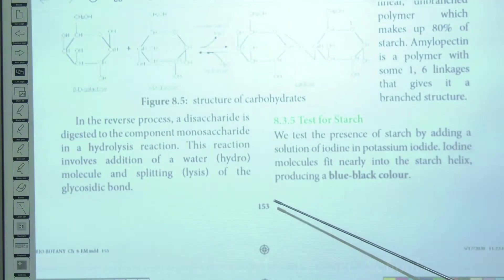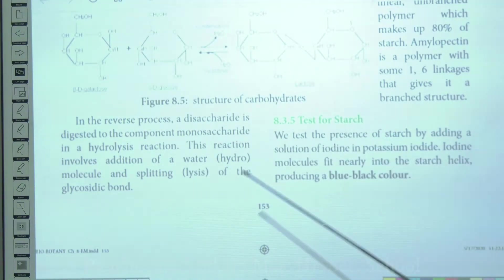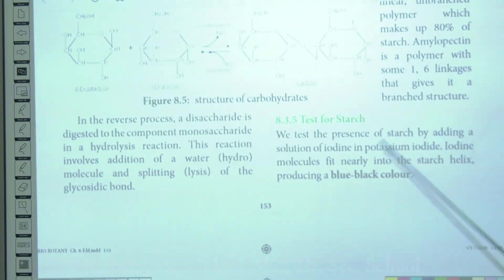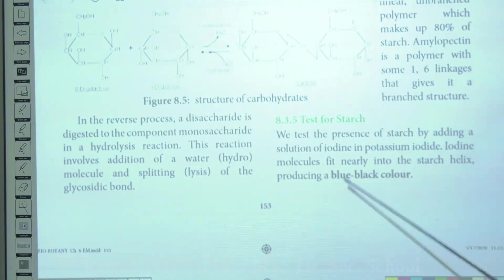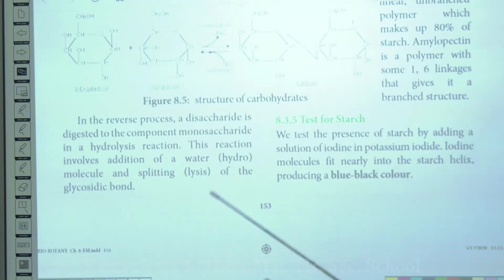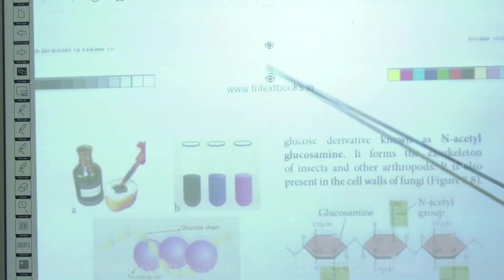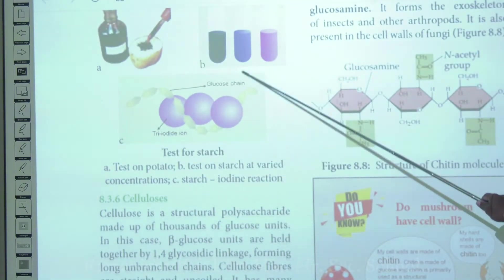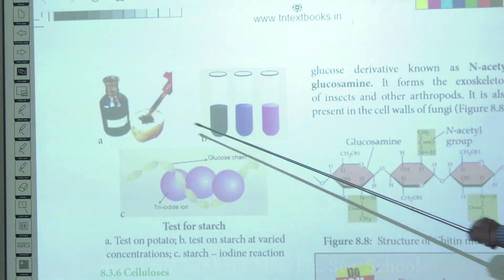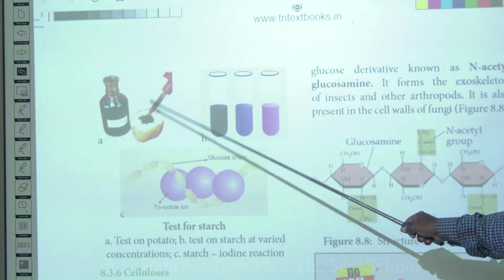To test whether a compound contains starch, you add iodine solution to it. Iodine mixes with starch and forms a blue-black color. If the compound produces a blue-black color with iodine, it contains starch; if no blue-black color is produced, it is not starch. In the diagram, iodine is added to a potato and it gives a blue-black color, showing the presence of starch.